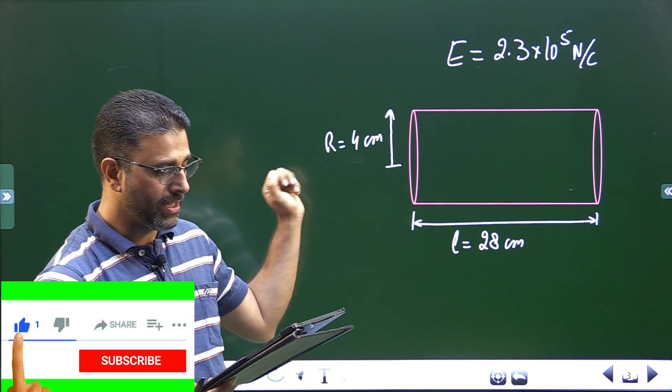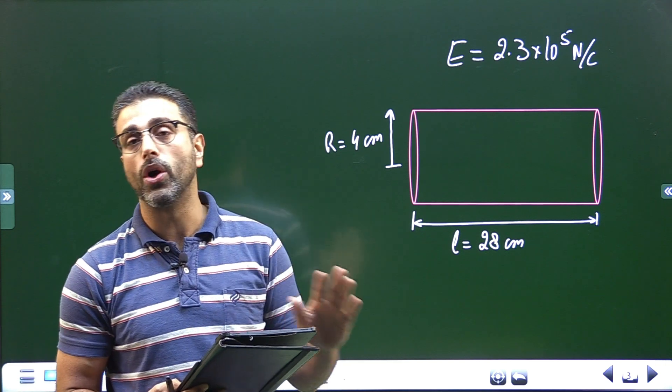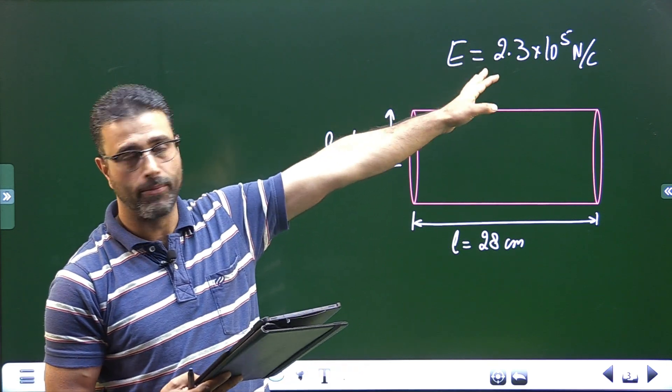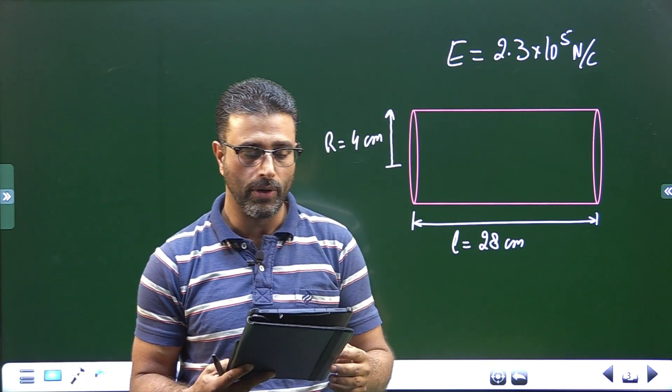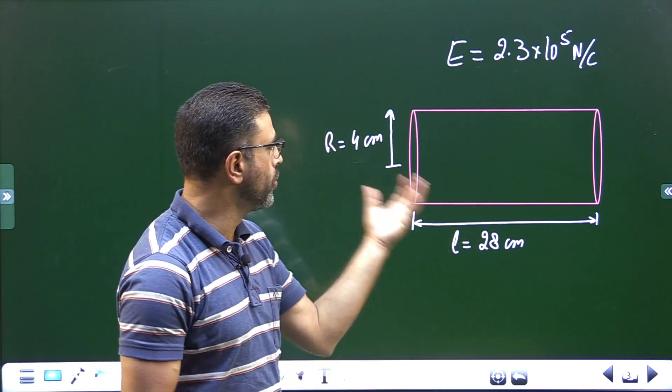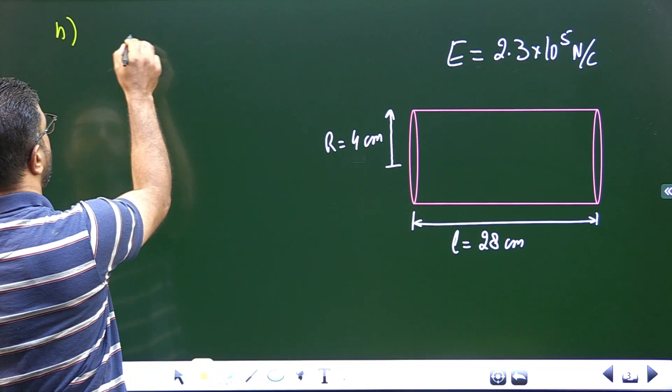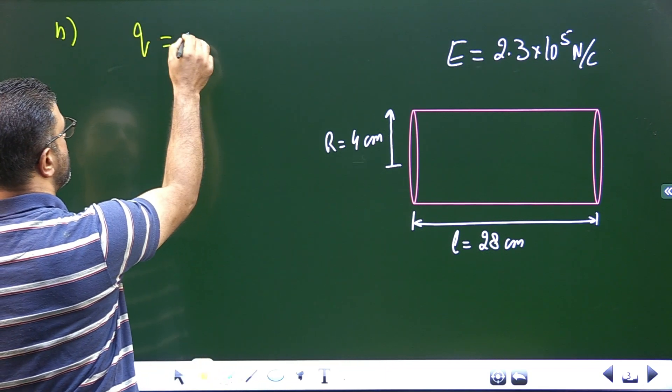So we have new radius 4 centimeters, length has changed, radius has changed. The electric field at the drum surface must not change, so this electric field is same, 2.3 × 10^5. What must be the charge on this new drum? Exactly the same, just the new values. So part B, I'll directly begin with Q = ε₀ × 2πRL × E.